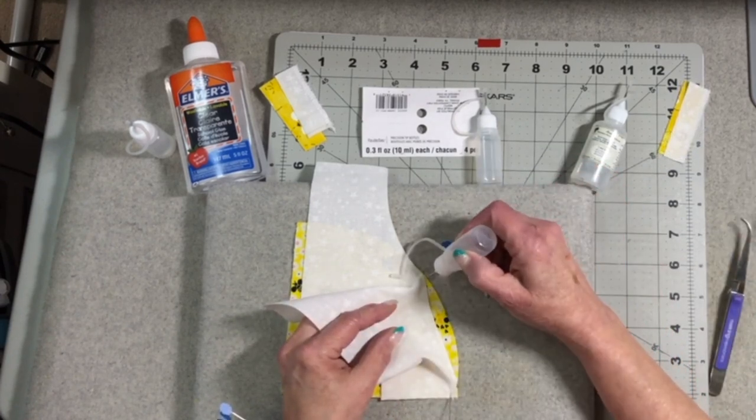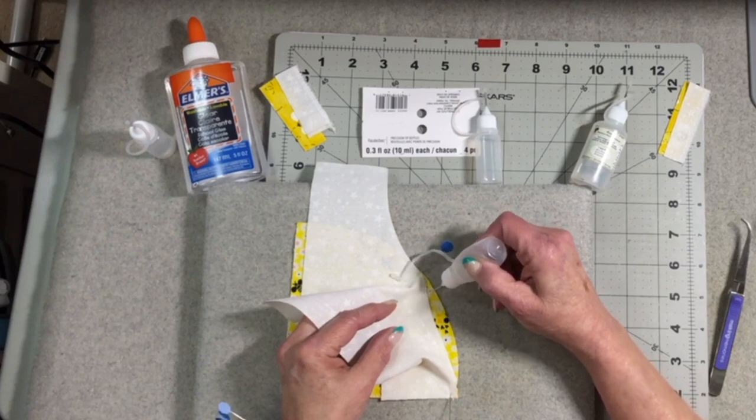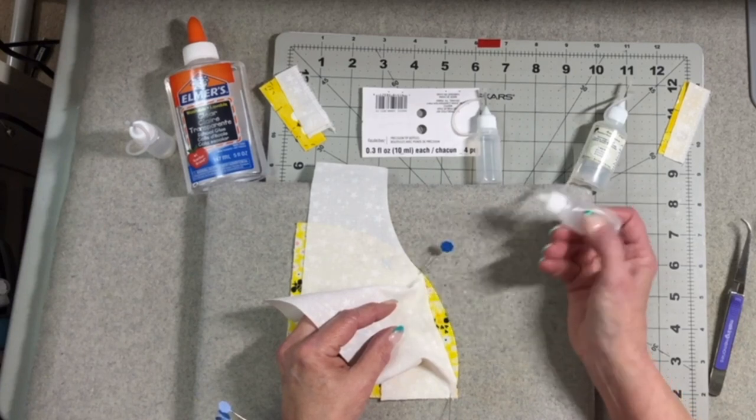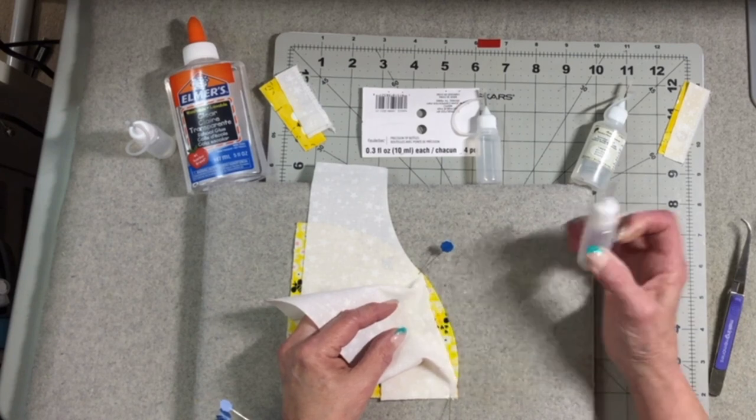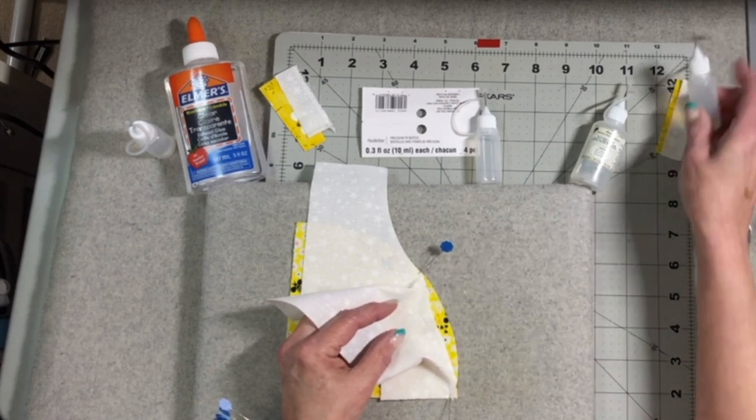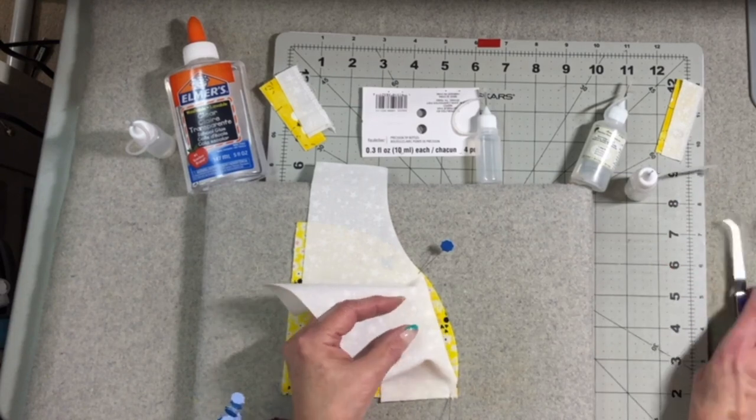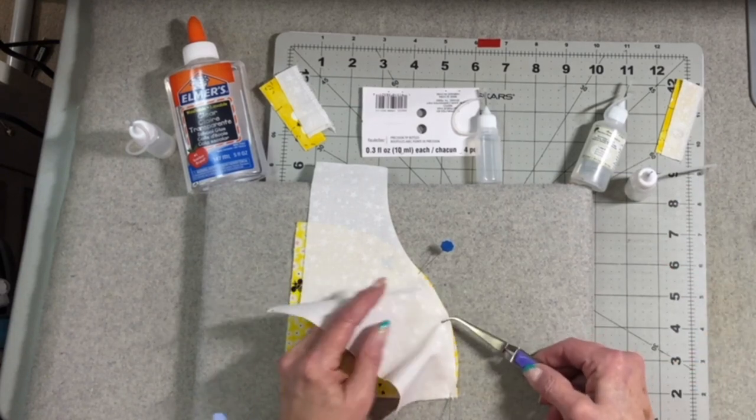I'm going to run my Seamalign Glue just along the edge of that piece like I did in the previous video and again you don't want to use very much and now I'll position this into place.